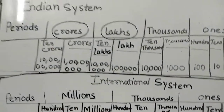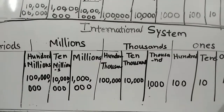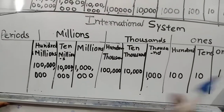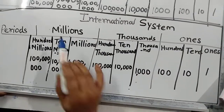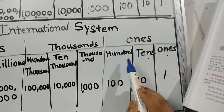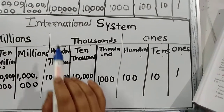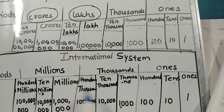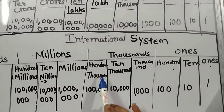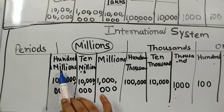But the Indian system is not recognized internationally. In the international number system, there are only three major periods: ones, thousands, and millions. In ones: ones, tens, hundreds. In thousands: thousand, ten thousand, and hundred thousand. So here, where in the Indian system we have lakh, in the international system it is hundred thousand. And in place of ten lakh and crore, we have million — millions, ten millions, and hundred millions.